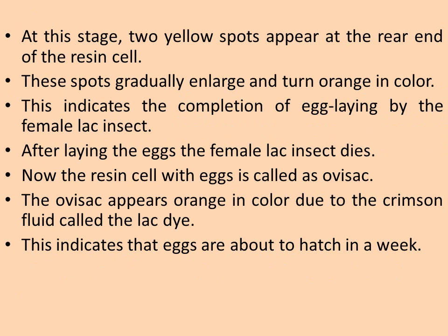After about 14 weeks, the female completely shrinks in size, allowing light to pass into the cell and onto the eggs. At this stage, two yellow spots appear at the rear end of the resin cell, which gradually enlarge and turn orange, indicating completion of egg laying. After laying the eggs, the female lac insect dies. The resin cell with eggs is called the ovisac, which appears orange in color due to a crimson fluid called lac dye, indicating eggs are about to hatch in a week.